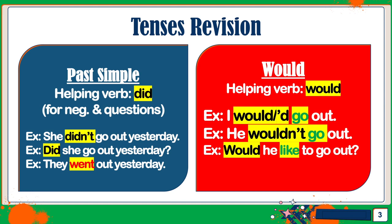Just like these examples: 'She didn't go out yesterday.' 'Did she go out yesterday?' For an affirmative sentence, you need to learn the past verb. So for example, we have 'go' here. What is the past verb of 'go'? It is 'went.' So 'They went out yesterday.' These are irregular verbs, but there are also regular verbs that end in -ED.